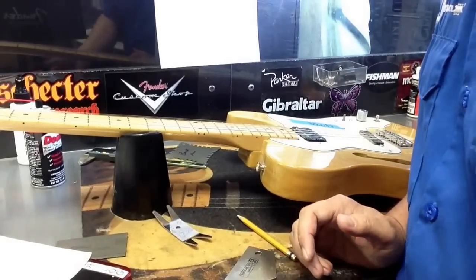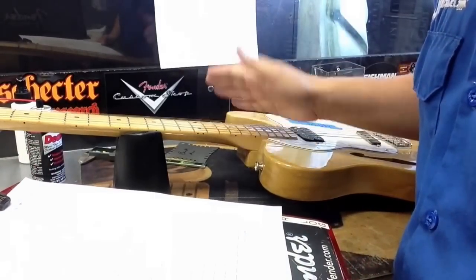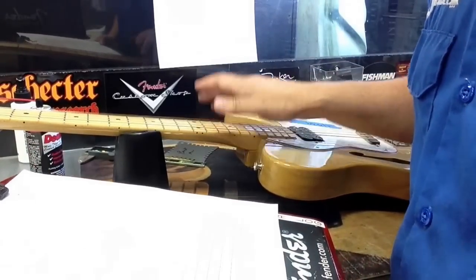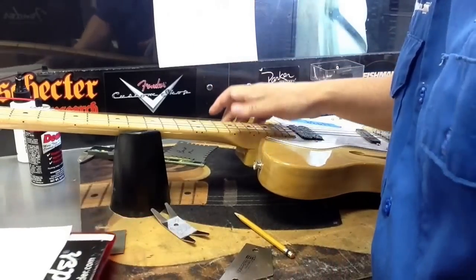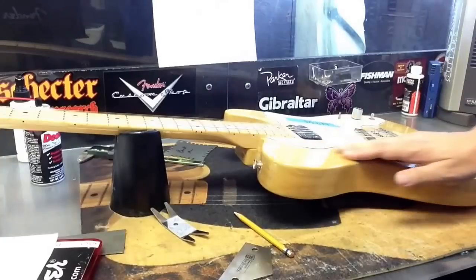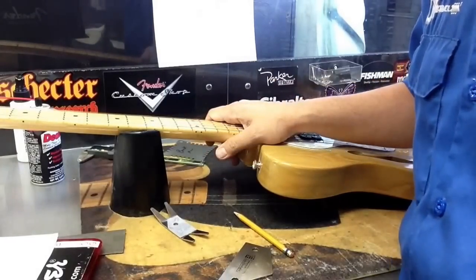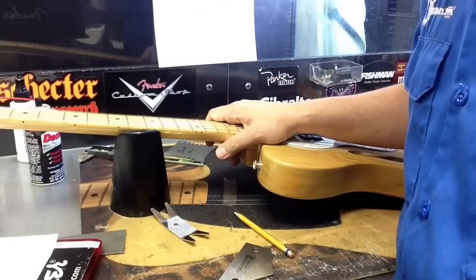We would determine if there are high frets, set the neck so it's as straight as it can be, and at the end we would polish it all up and make it look as nice as possible and put it back in its case. The customer would have a nice new guitar that plays better than new. All right guys, thanks for your time. Know Your Gear.